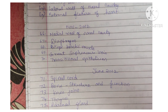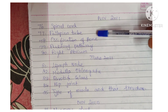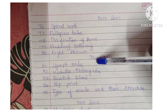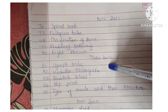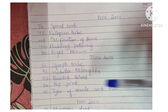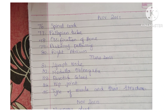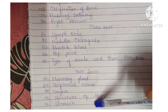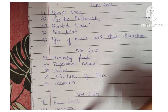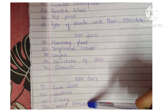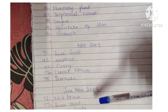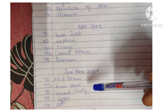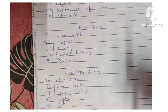Further anatomy topics: adrenal gland, spinal cord, fallopian tube, ossification of bone, auditory pathway, right atrium, lymph node, medulla oblongata, parotid gland, hip joint, types of muscles with structure, mammary gland, trigeminal nerve, tongue, structure of skin, stomach, knee joint, nephron, ovary, cranial nerves, pancreas, midbrain, knee joint, nasal cavity, spleen, and aorta.